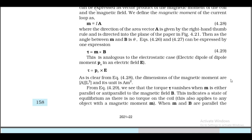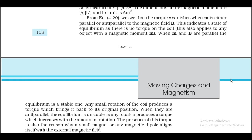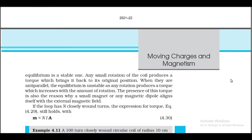From equation 4.29, the torque vanishes when m is parallel or anti-parallel to B, indicating states of equilibrium. When m and B are parallel, equilibrium is stable — any small rotation produces a restoring torque. When anti-parallel, equilibrium is unstable — any rotation produces a torque which increases with rotation. This torque is also the reason why a small magnet or magnetic dipole aligns itself with the external magnetic field. If the loop has n closely wound turns, torque equation still holds with m = niA.